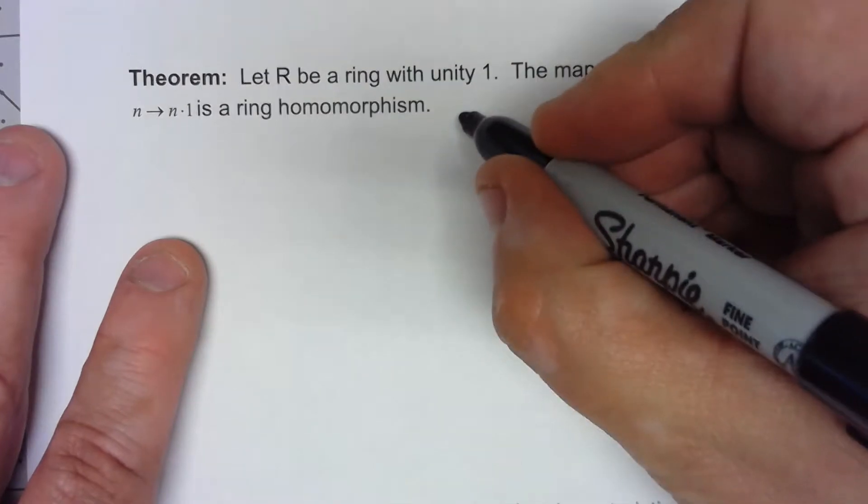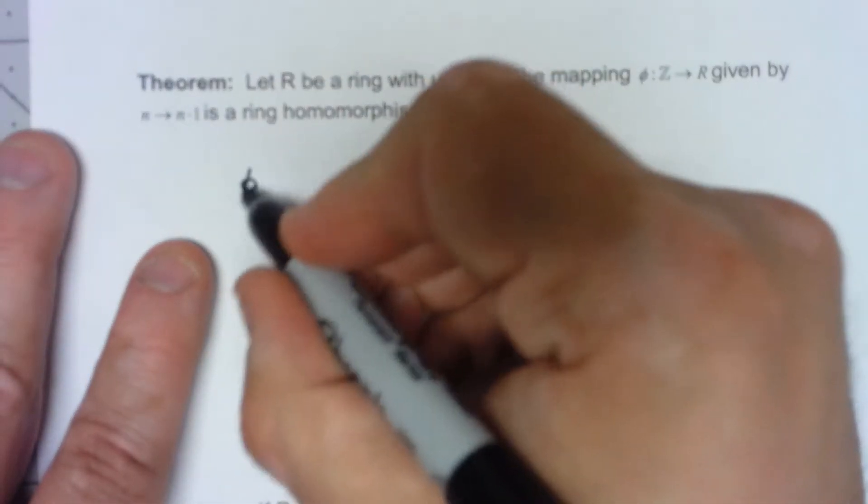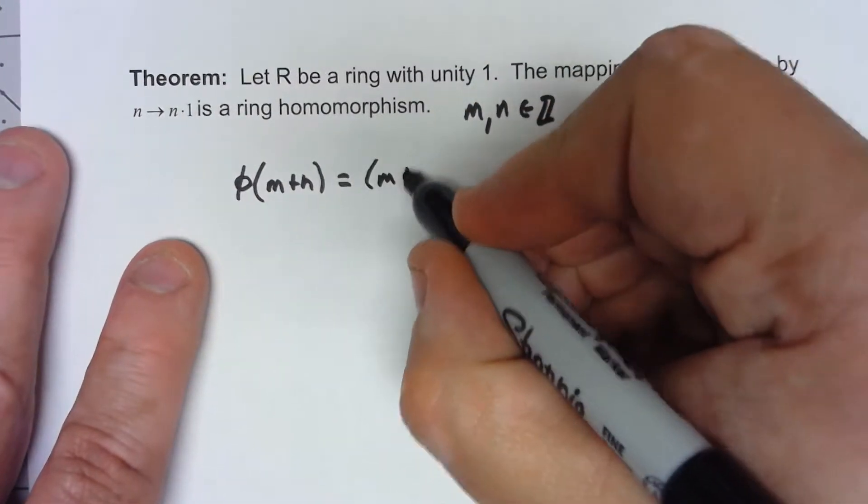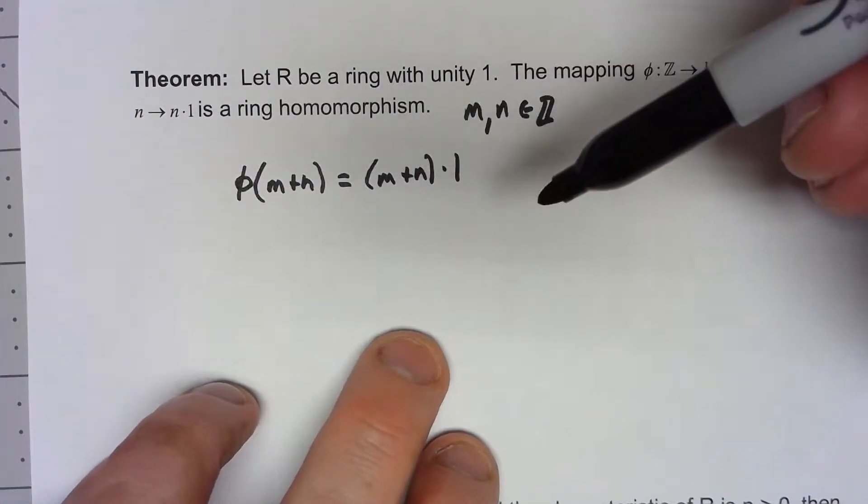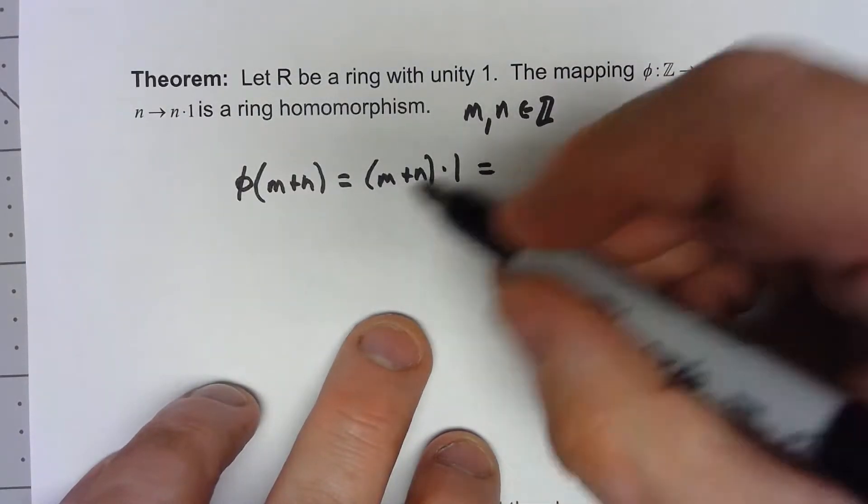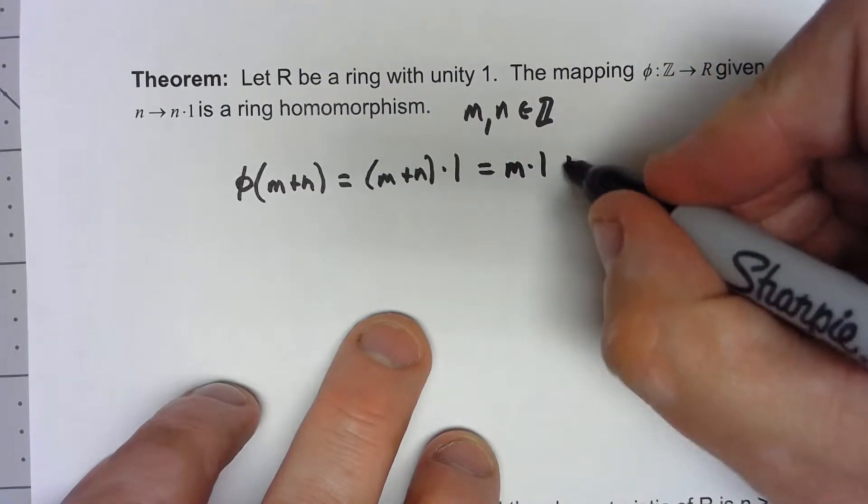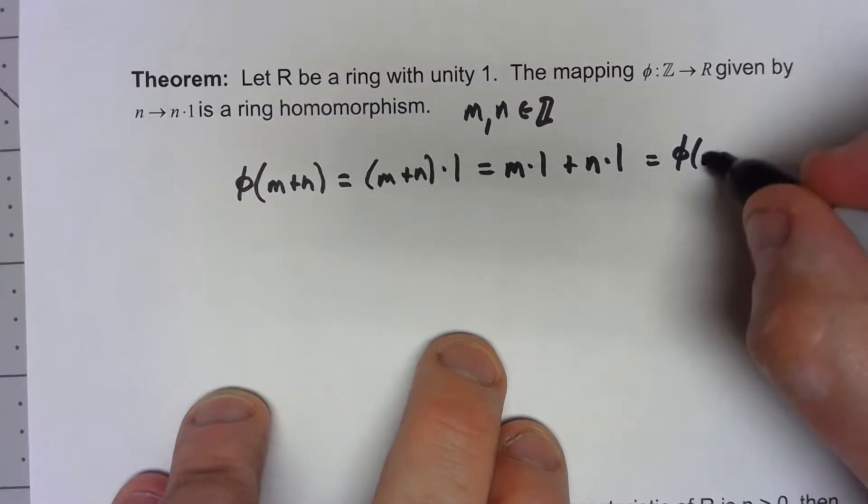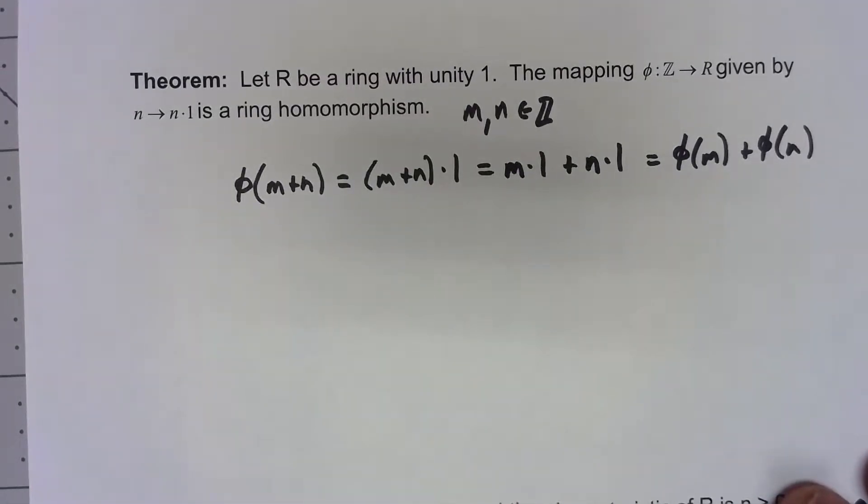So let's say that m and n are integers. So what is φ of m plus n? Well by definition it's m plus n times 1. So again 1 added together m plus n times, but if I'm just adding 1 m plus n times that's the same thing as adding 1 m times plus another n copies of 1. So that's equal to φ of m plus φ of n and certainly it preserves addition.